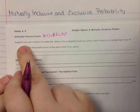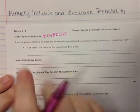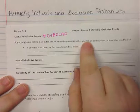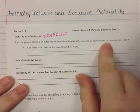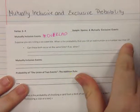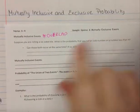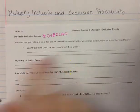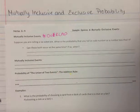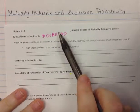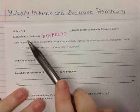Suppose you are rolling a six-sided die — we're rolling one die. What's the probability that you roll an odd number or a number less than four? So we ask ourselves: can these both occur at the same time? If so, when? If we write out the values and look at the differences between them and we find an overlap, that's inclusive.